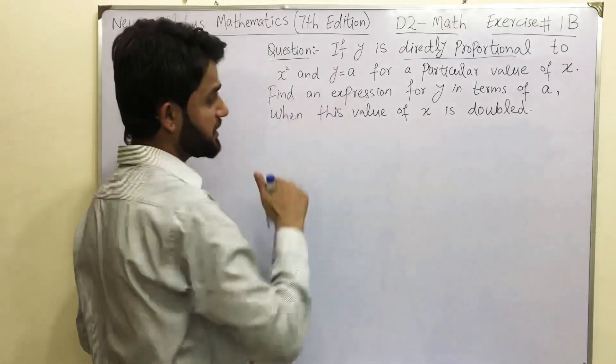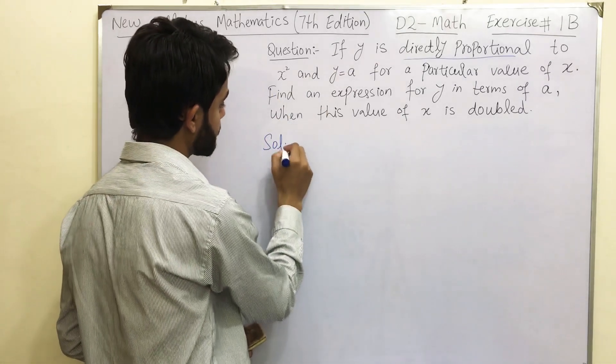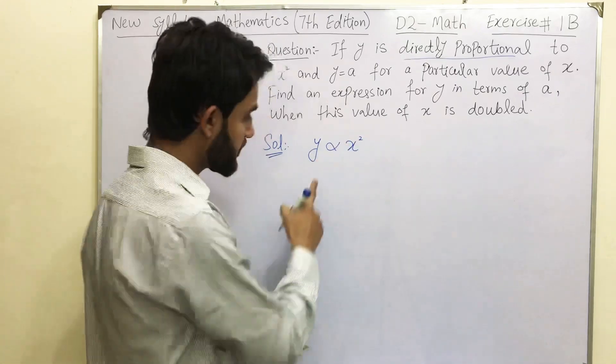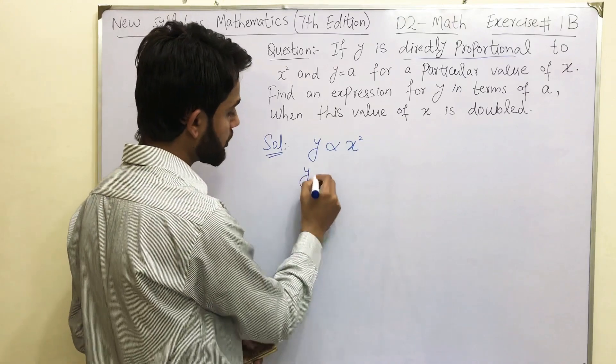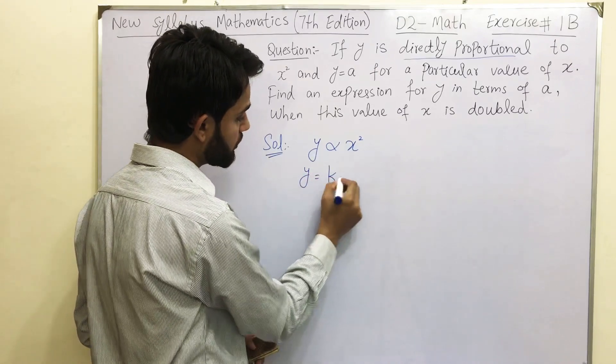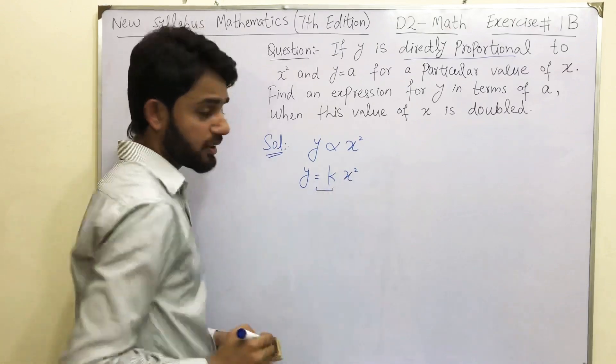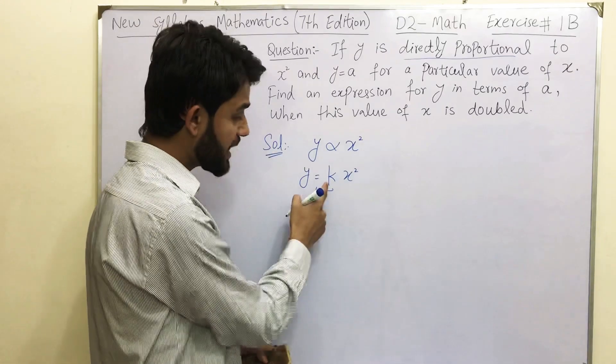So the question says y is directly proportional to x square. This is a symbol for directly proportional. Once you remove this directly proportional, you must need to write equals to k times x square. This is a constant that we have been introduced over here. You must need to introduce a scalar. It could be any constant over here.